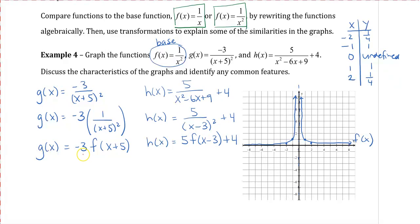For g(x), from our transformation, all y-values are going to be three times bigger, and we're going to move it over by negative 5. So my asymptote is now at x = −5. I also have a reflection — since the coefficient is negative 3, there's a reflection over the x-axis, and all points are going to be three times bigger. At x = −1 from the new axis, y = −3 instead of 1. So we draw this upside down, giving us the g(x) graph.